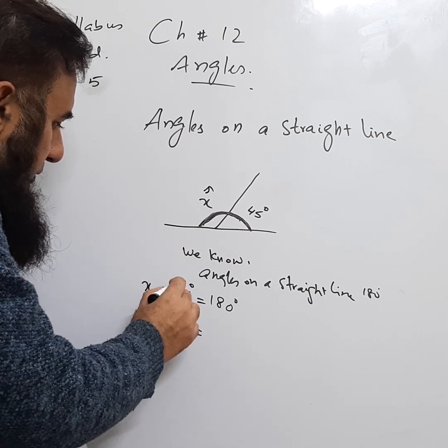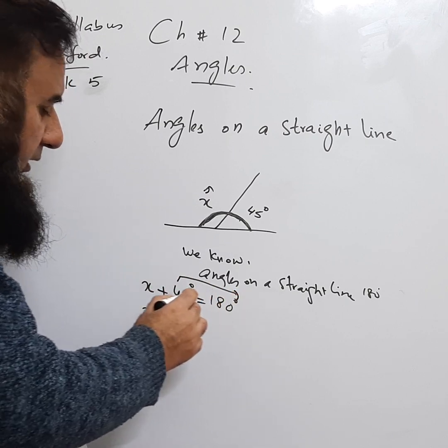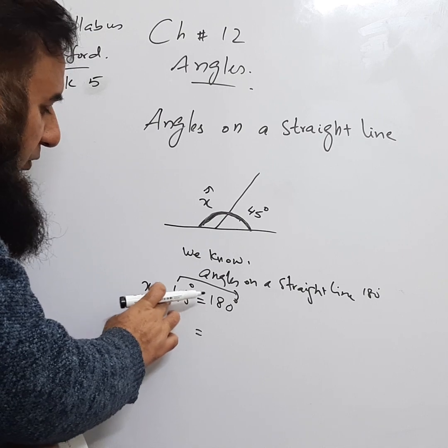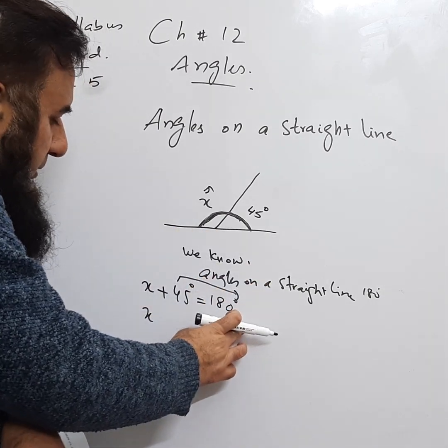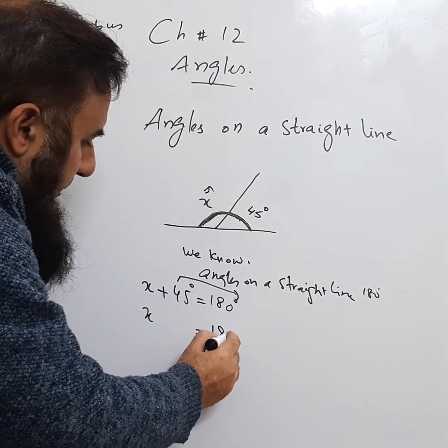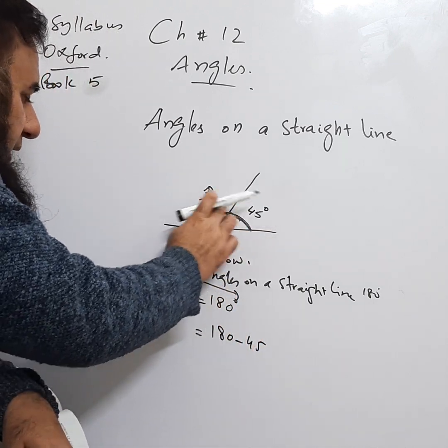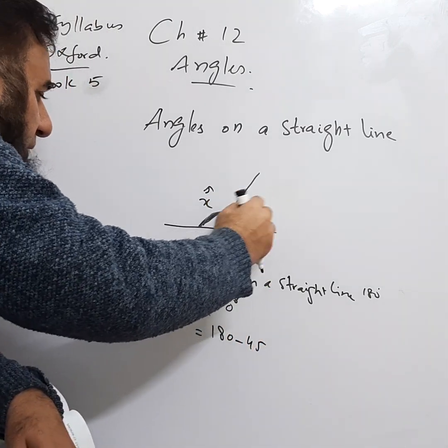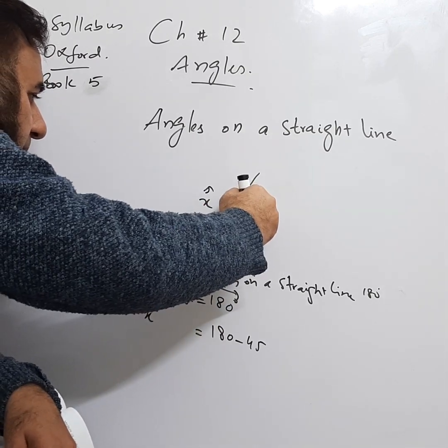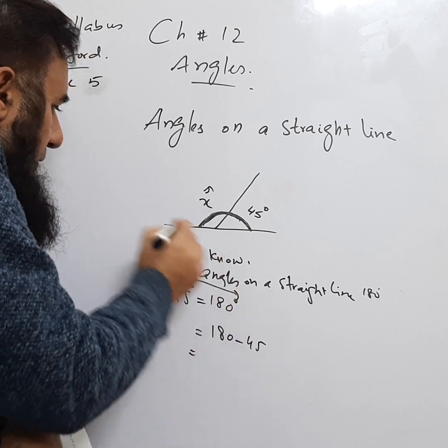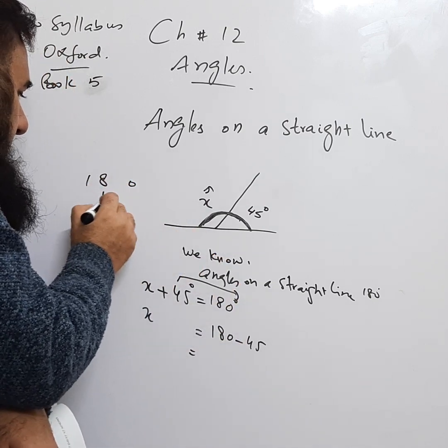We will take 45 to the other side of the equal sign. If it is being added here, when it goes to the other side it becomes negative, so X equals 180 minus 45. If we subtract 45 from 180, we will get X: 180 minus 45 equals 135.